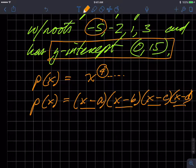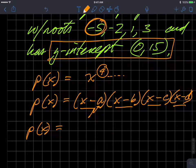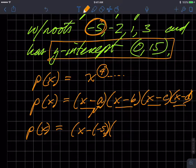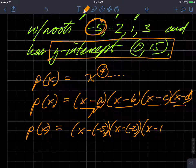So this negative five, in fact, is one of these guys. And so I know that p of x is going to be made up of x minus negative five, x minus negative two, x minus one, and x minus three.